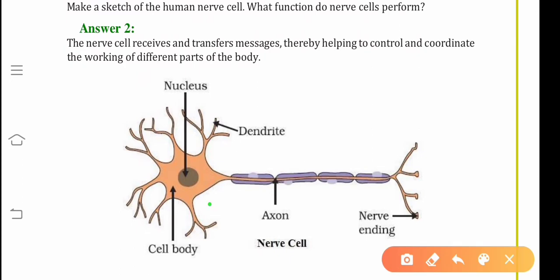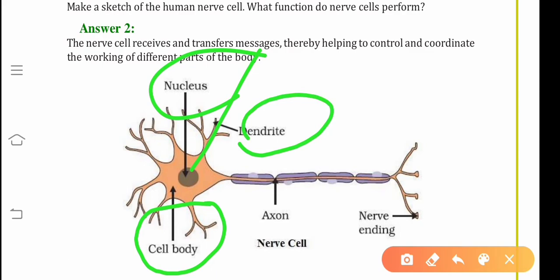It consists of a round cell body which contain a central nucleus. Then there are processes called as dendrites. A tail-like part known as axon and nerve endings. This is the longest cell in the human body.